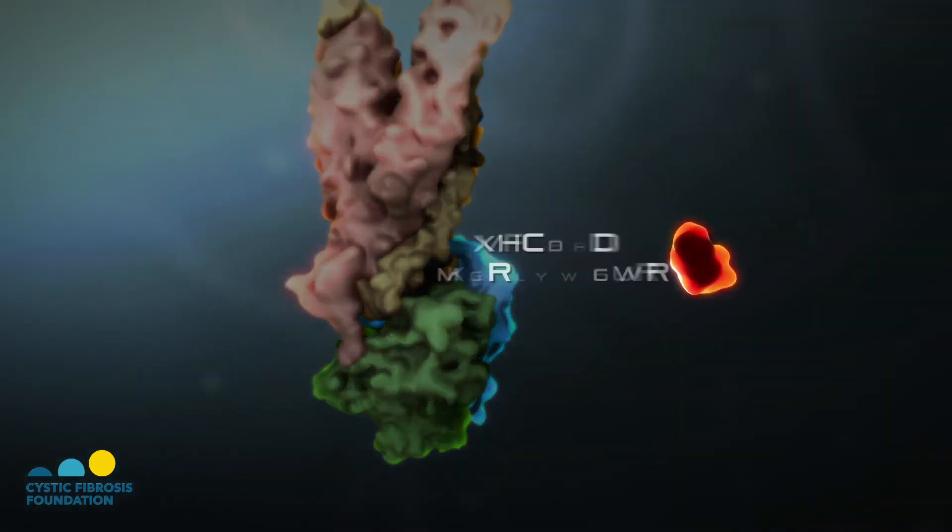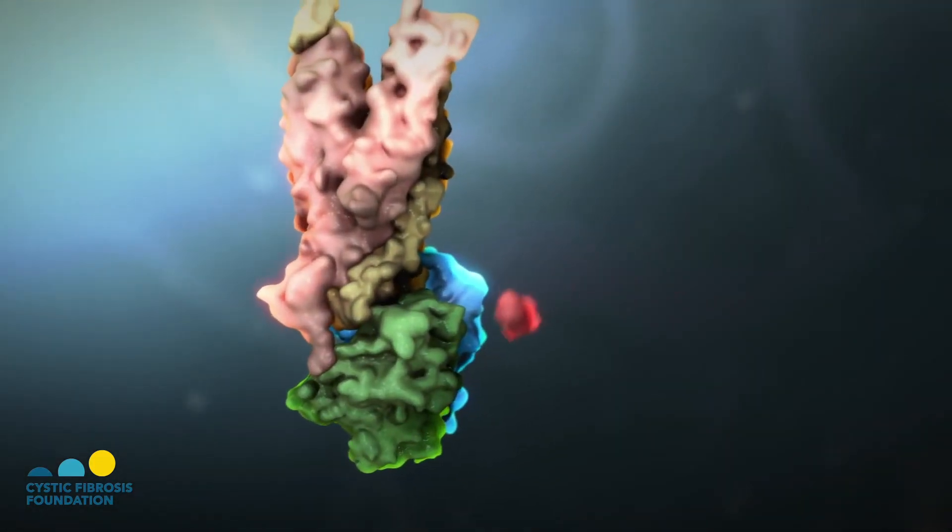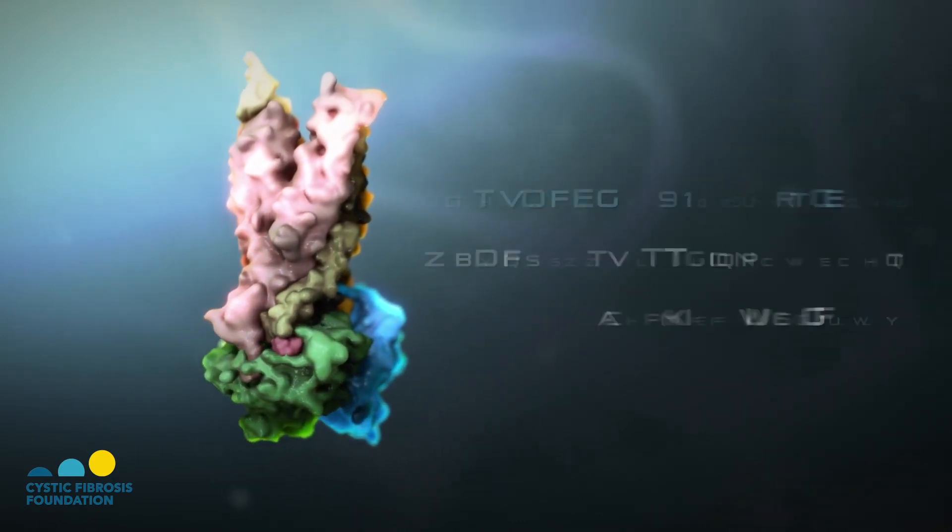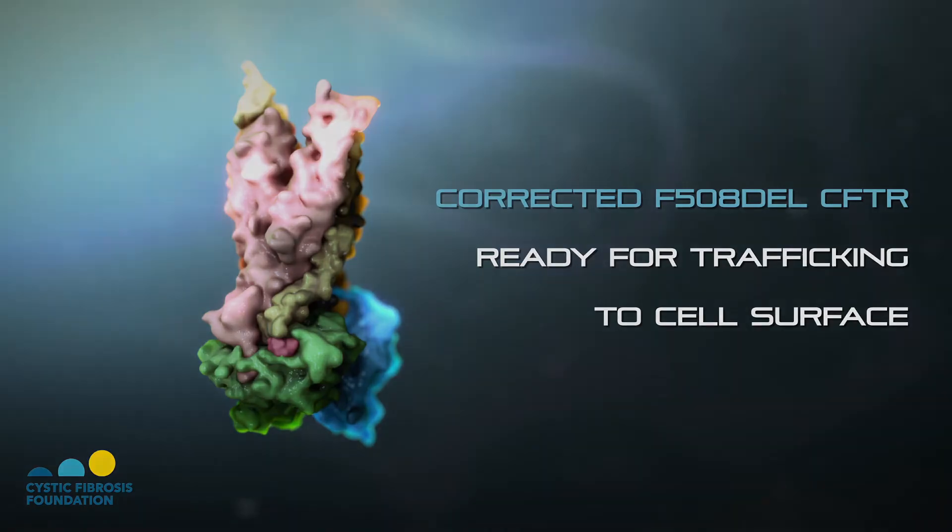Researchers have found that adding a second corrector drug can even further stabilize CFTR. Once stabilized, the CFTR protein is ready to be moved or trafficked up to the cell surface and function as a chloride channel.